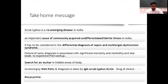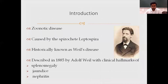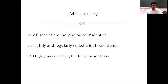Coming to the next topic — leptospirosis is the other most underdiagnosed disease in our country. It is a zoonotic disease caused by the spirochete Leptospira, historically known as Weil's disease. It was described by Adolf Weil in 1985 with the clinical hallmarks of splenomegaly, jaundice, and nephritis.